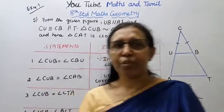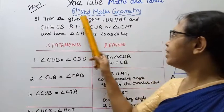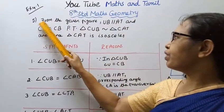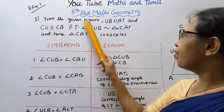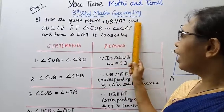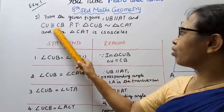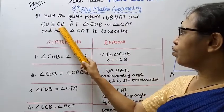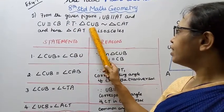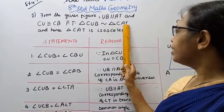Hello students, welcome to Max and Tamil channel. H10MX Geometry Exercise 4.1. From the given figure, UB is parallel to AT and CU is congruent to CB. Prove that triangle CUB is similar to triangle CAT.